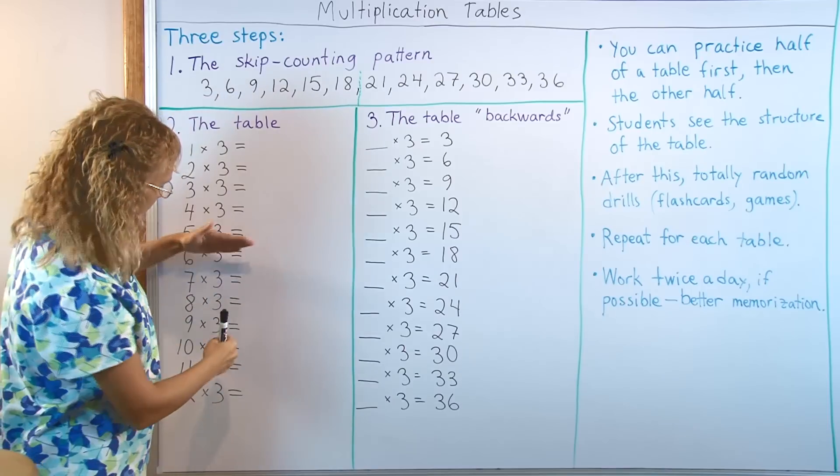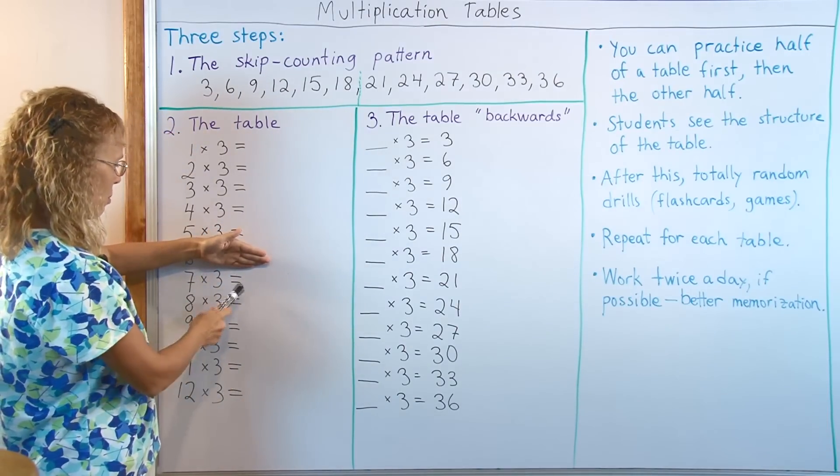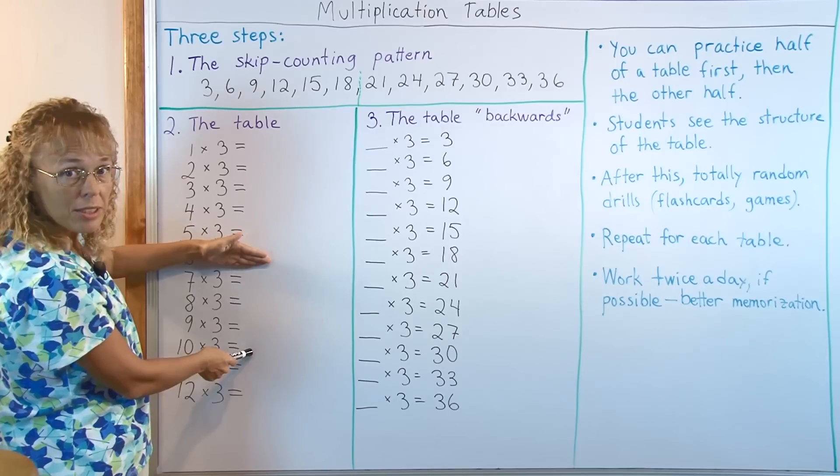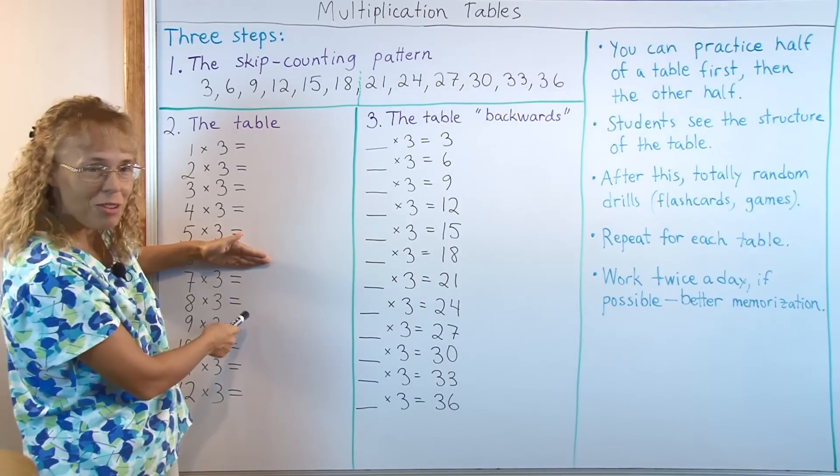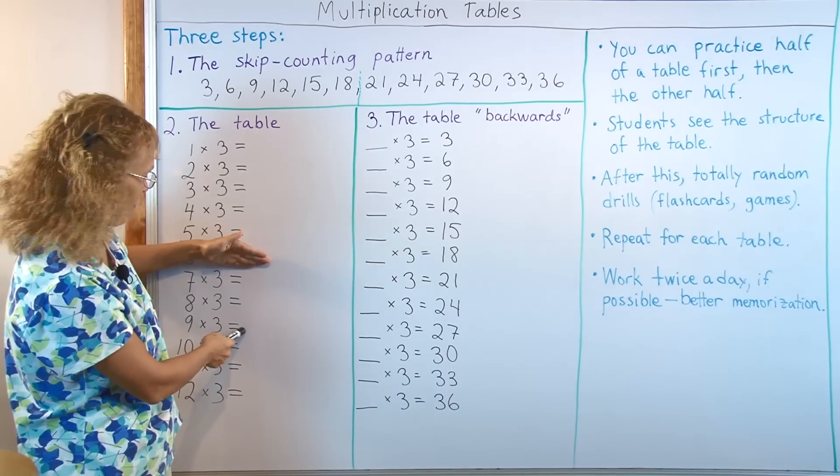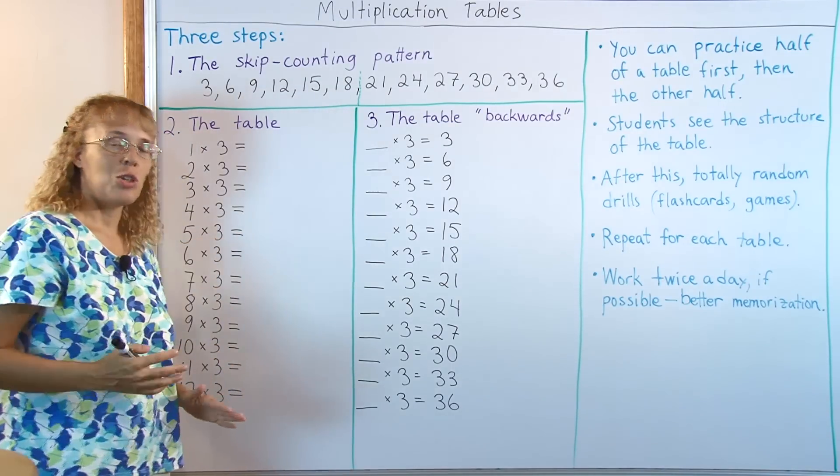And then similarly practice the latter half of the table pointing randomly to problems. 7 times 3? 10 times 3? 12 times 3? 8 times 3? Can you do that? 9 times 3? 7 times 3? 11 times 3? And so on.